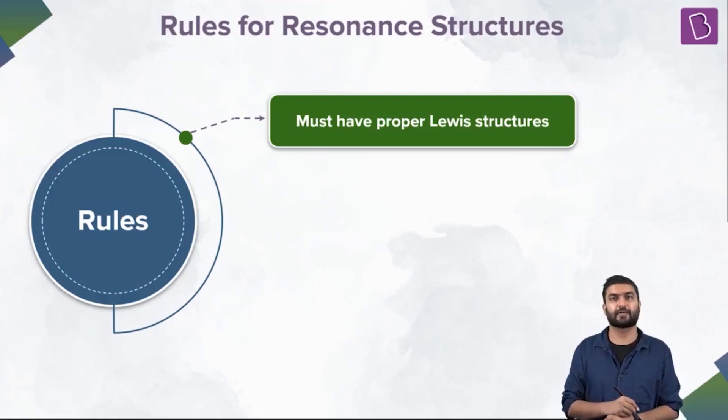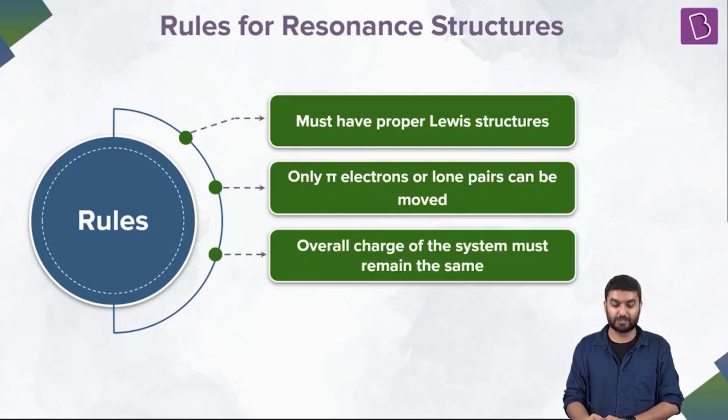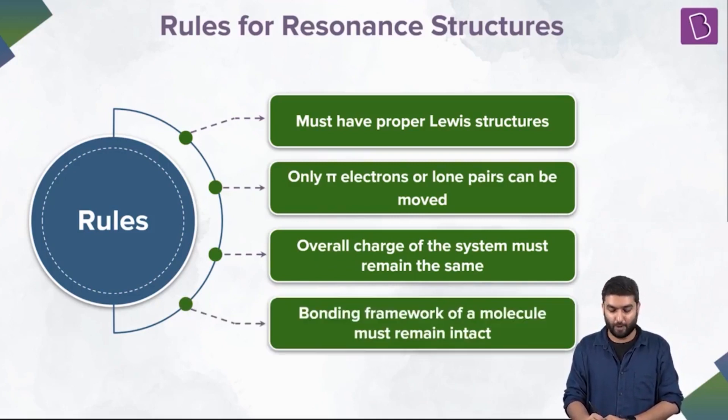All right. So let's wrap up our resonance topic. So what are the rules? Must have proper Lewis structures. Only pi electrons or lone pairs can be moved. Overall charge of the system must remain the same. Bonding framework of a molecule must remain intact. So you're not like, okay, let's break this sigma bond, let's move this nuclear over there, let's rearrange something new and make up a new molecule. No, you don't do that.